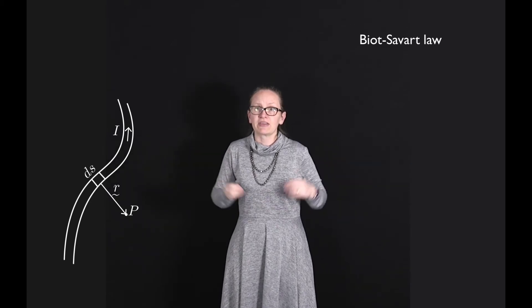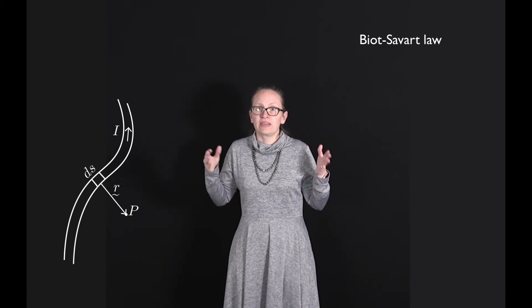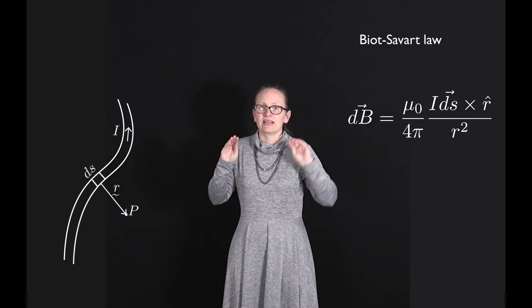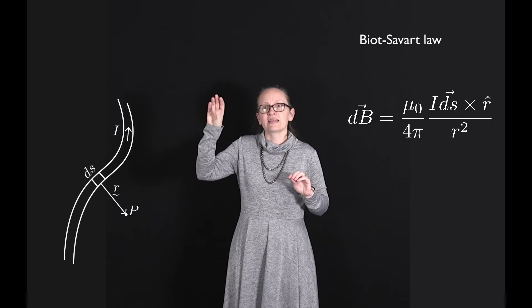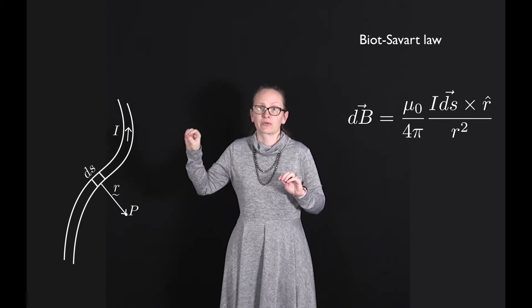They discovered this can be calculated with the equation db is equal to mu naught over 4 pi i ds cross r hat divided by r squared.